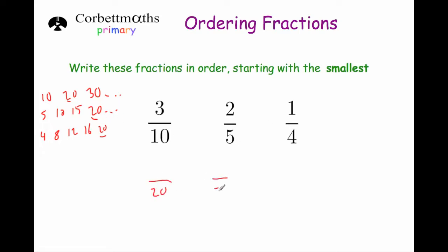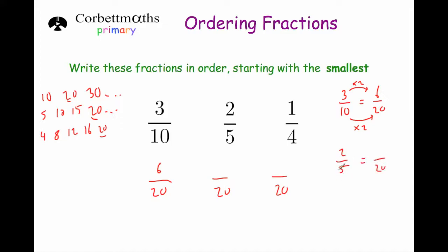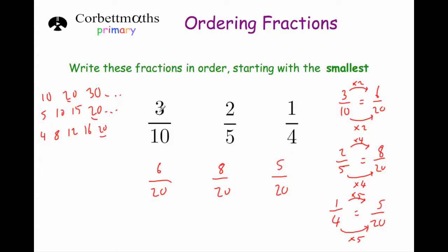We're going to make all the fractions have a denominator of 20. For 3 tenths, we times the bottom number 10 by 2 to get 20, so we times the top by 2 as well — 3 times 2 is 6. So 3 tenths is the same as 6 twentieths. For 2 fifths, to get to 20 we multiply by 4, so 2 times 4 is 8 — that's 8 twentieths. And for 1 quarter, we times the 4 by 5 to get 20, so 1 times 5 is 5 — that's 5 twentieths.